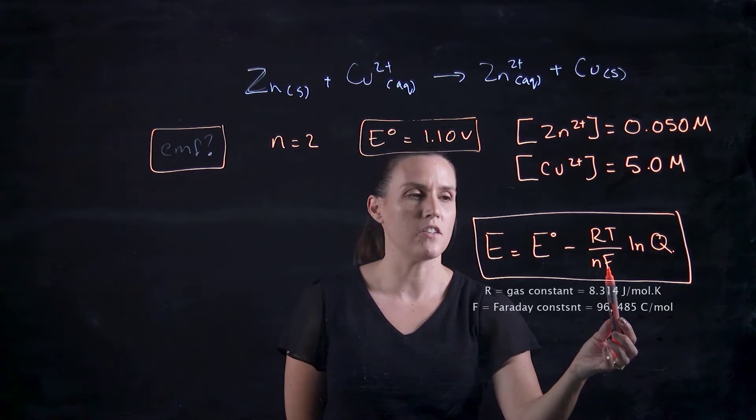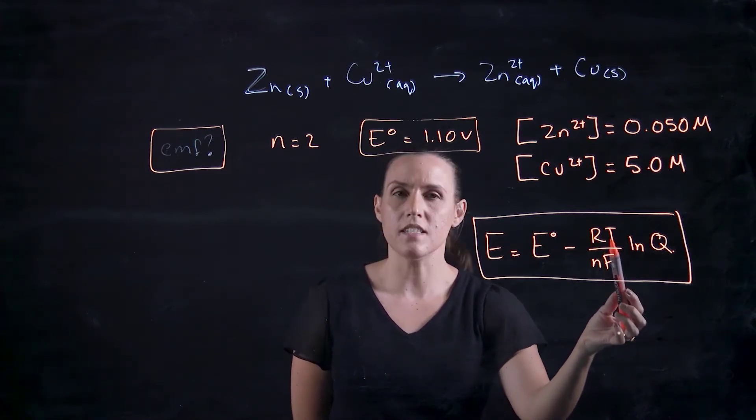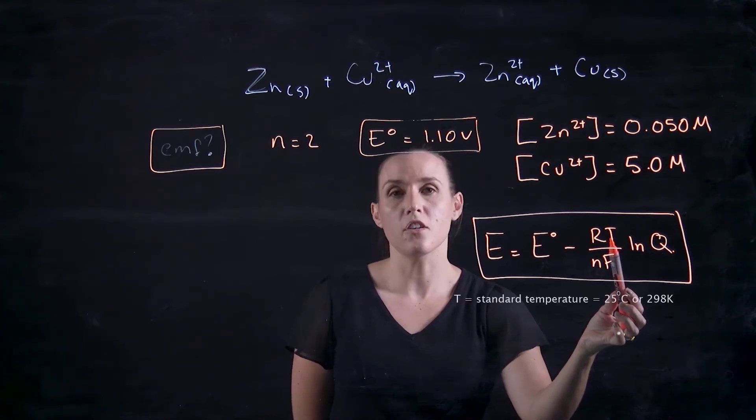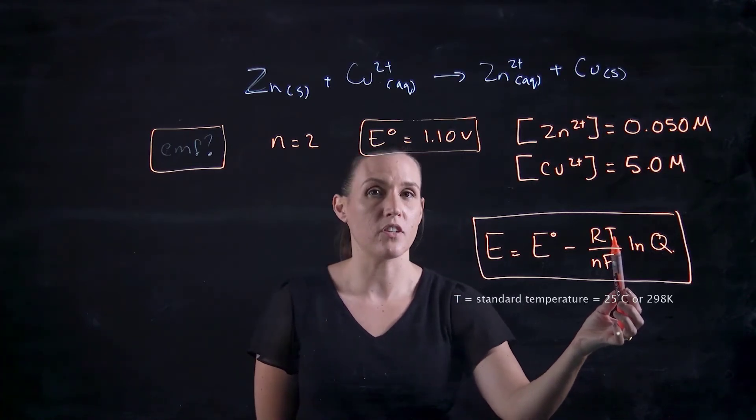So R is the constant, Faraday's constant as well, so R and F are constants. T is the temperature of the system, so you might assume that it's at 25 degrees Celsius.